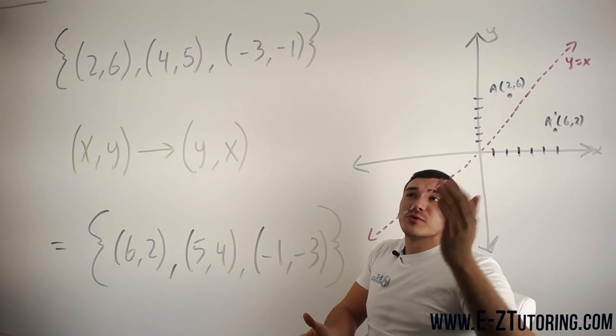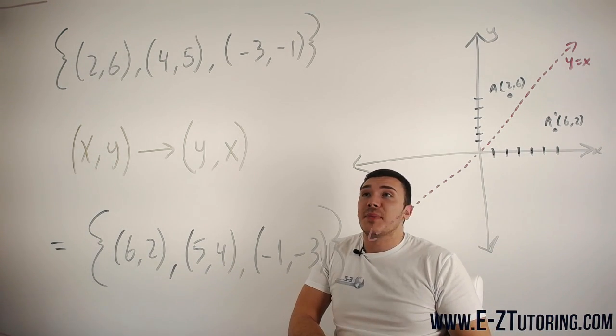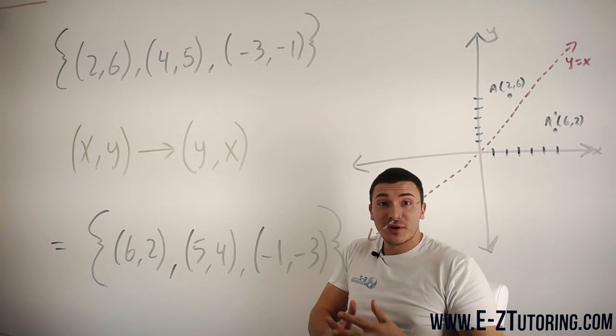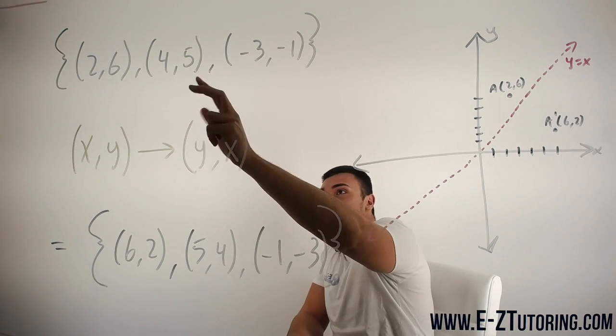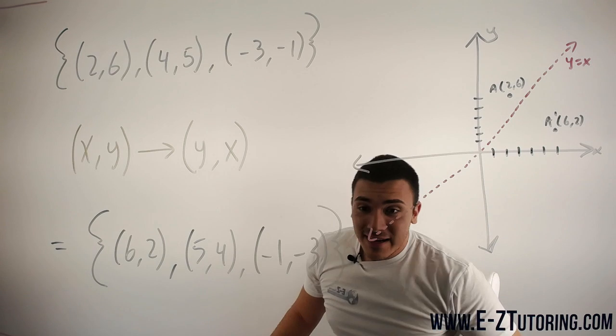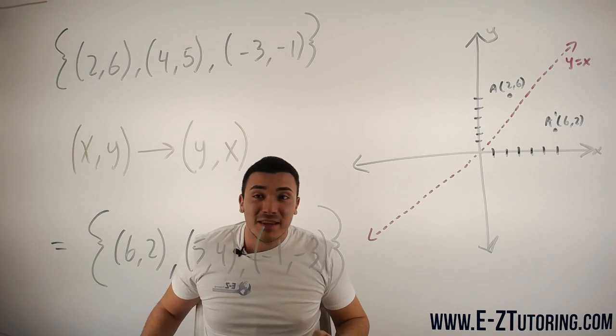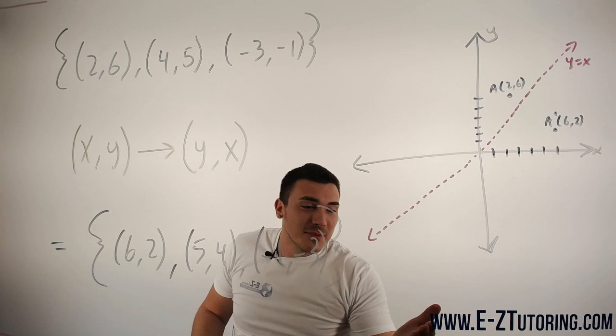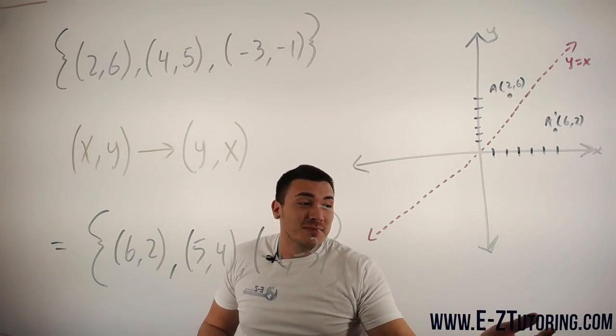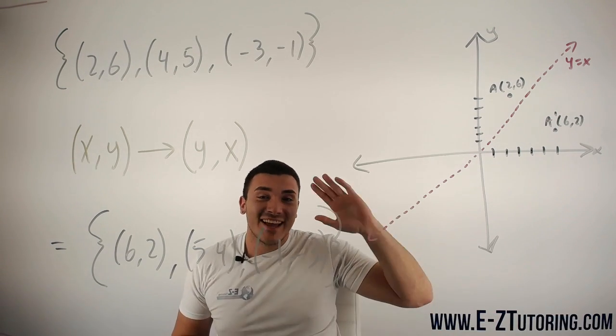Of course, you don't have to do this every time. I just wanted to explain what's happening. In the future, whenever you want to find the inverse of your coordinates, it's as simple as just flipping all your coordinates. I hope that made sense. If you guys ever want ACT or SAT help, be sure to visit my website www.e-ztutoring.com. Thank you and have a good day.